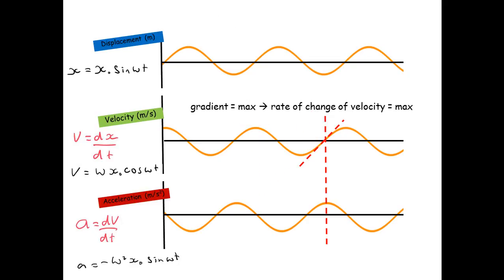Here the gradient is a maximum. So the rate of change of velocity is going to be a maximum. And if you look at the acceleration graph it is actually at a maximum.